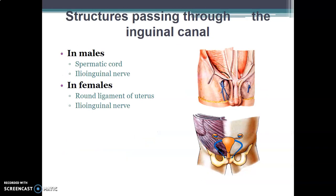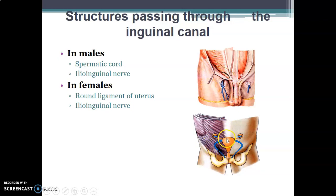The inguinal canal contains the ilioinguinal nerve in both males and females. In males, it also contains the spermatic cord, while in females it contains the round ligament of the uterus.